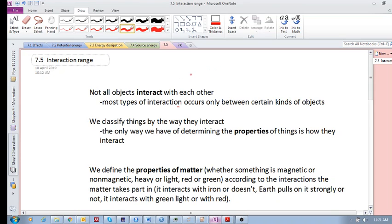Different objects won't interact with each other. What's interesting is we classify things actually by the way they interact. We give objects attributes or properties, but these attributes or properties are actually defined by the way they interact.